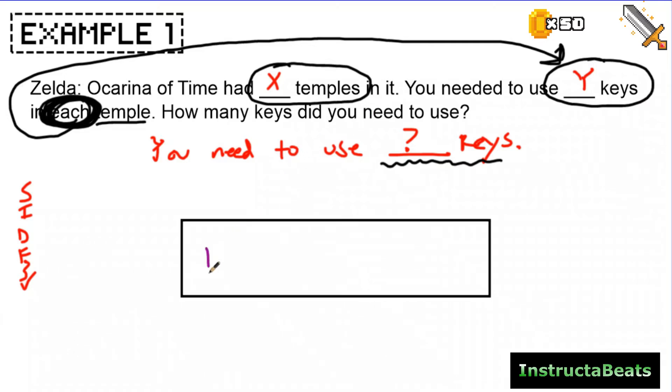So I saw this word each, which tells me I need equal groups. And because it said Y keys in each temple, I know that my Y keys are going to be my parts. So let me go ahead and draw my blank part-whole model. And I know I'm going to put Y as my parts, because it told me that there are Y keys in each. So I'm going to label this as keys, which means if my parts are keys, if everything in here is going to be a key, no matter what number I put in here, that means my total is going to be keys too.